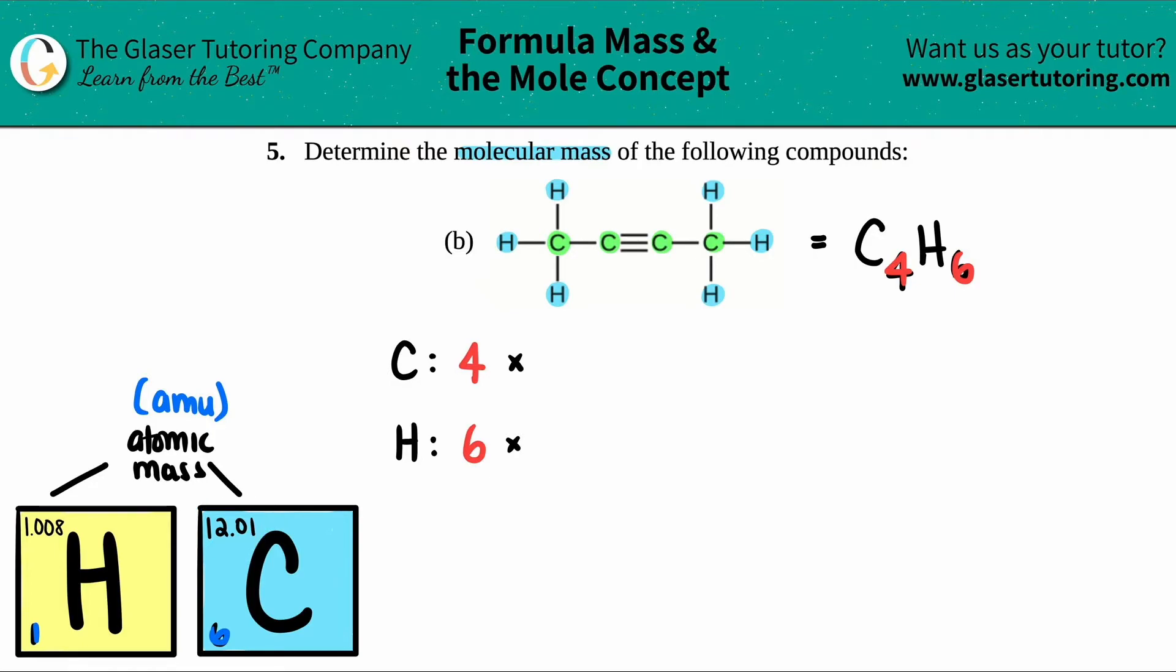So for carbon, I'm going to say that it's going to be 4 times 12.01 AMU. And then for hydrogen, it's going to be 6 times 1.008 AMU. And let's see what we get. So 4 times 12.01 is 48.04 AMU.